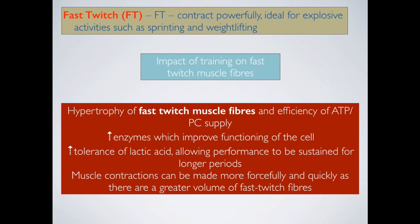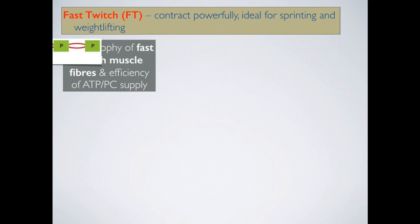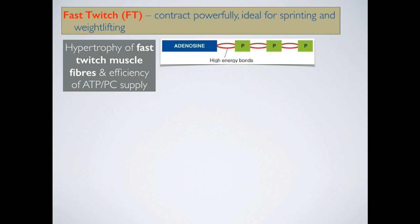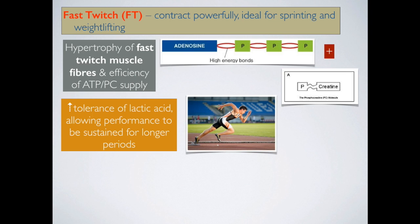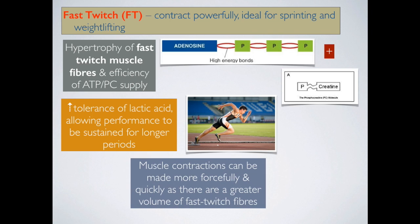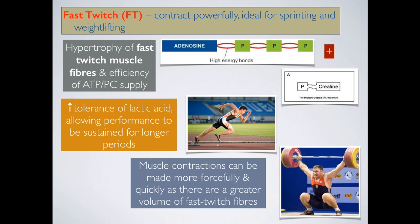If we train the anaerobic system — doing sprint training over a long period of time — we improve the function of these fast twitch fibres and will be able to run faster as a result. Muscle contractions can be made more forcefully and quickly as there are greater volumes of fast twitch fibres, and we improve in activities such as sprinting, weightlifting, and all sorts of other power events.